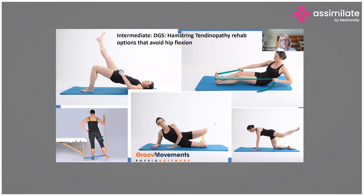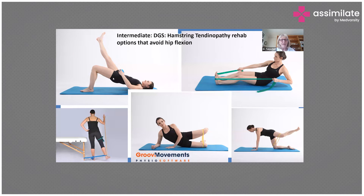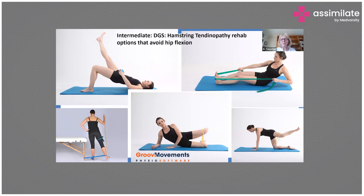Here are some examples for the intermediate phase with a hamstring tendinopathy. The injury is at the origin of the hamstring where it attaches onto the ischial tuberosity. This usually occurs with sprinting or anything involving hip flexion — such as deadlifts where you're over-flexing — which can cause hamstring tendinopathies.